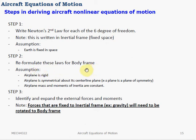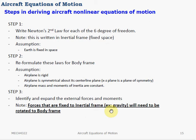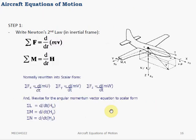To simplify our equations, we make two further assumptions: that the airplane is symmetrical about its centerline, and that the mass and moment of inertia of the aircraft are constant. The third step is to identify all the forces and moments around the aircraft. Note that the forces fixed to the earth's axis — which is gravity — will need to be rotated to the body frame.